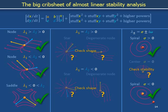When linear analysis indicates a star or degenerate node, the stability automatically carries over to the full dynamics, but the shapes of trajectories should be determined by hand.